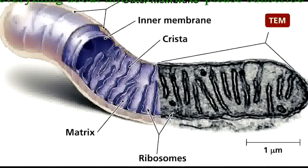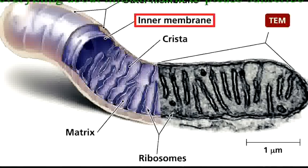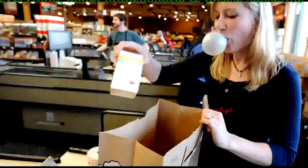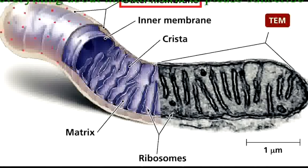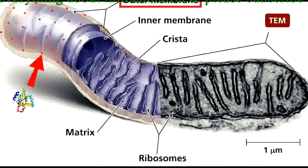Mitochondria have two membranes: an outer membrane and an inner membrane. You can think of mitochondria like double-bagged groceries at the supermarket. The outer membrane completely surrounds the mitochondrion and contains pores that allow ions, molecules, and small proteins to pass through freely.